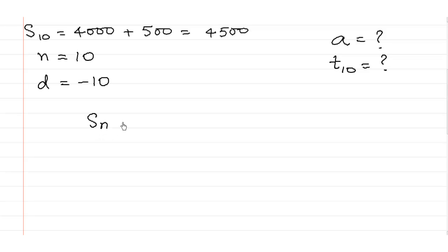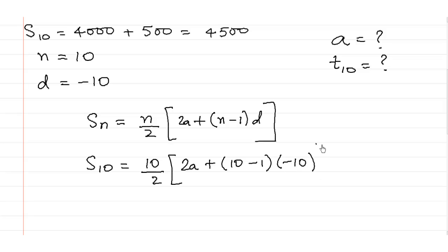To do so we will use the formula for Sn. Sn is equal to N upon 2, 2A plus N minus 1 into D. So S10, because the value of N is 10, this is equal to 10 upon 2 into 2A. We do not know what is A, into 10 minus 1 into minus 10. The common difference is negative 10.